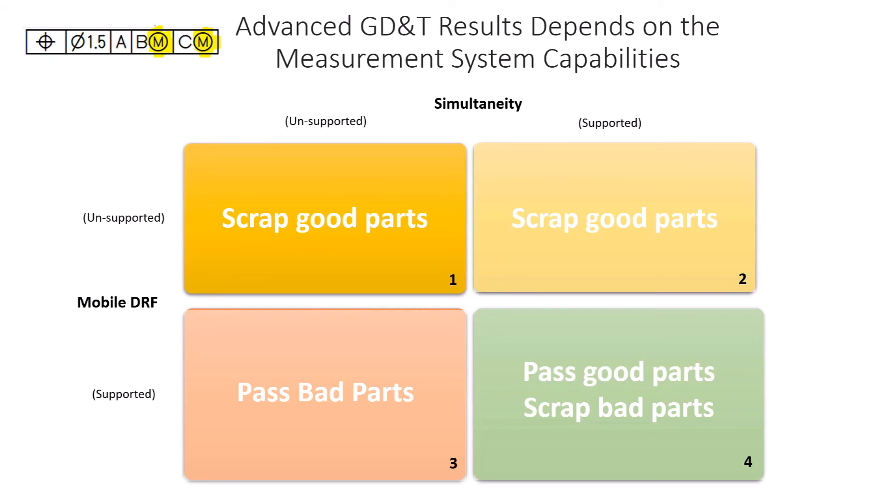Unsupported mobile DRF and unsupported simultaneity. When a tolerance datum reference frame, a DRF, has datums with material modifier, then the datum alignment is allowed to move within the datum bonus mobile DRFs, effectively allowing the tolerance zone to shift location. When mobile datum reference frames are not supported, the tolerance zone is locked into position and some parts which would have passed with a tolerance zone shift now fail.